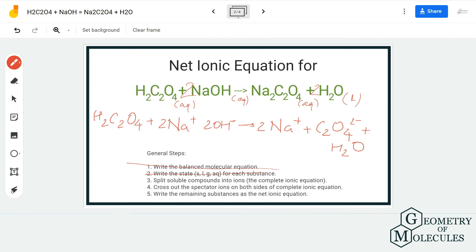Now you have to cross out the spectator ions on both sides. The spectator ions are the ions which remain the same on both sides and there are no changes in them. If you look at this equation closely, 2Na⁺ is a spectator ion on both sides, so you can cancel this ion out. The remaining ions are the other part of the net ionic equation.